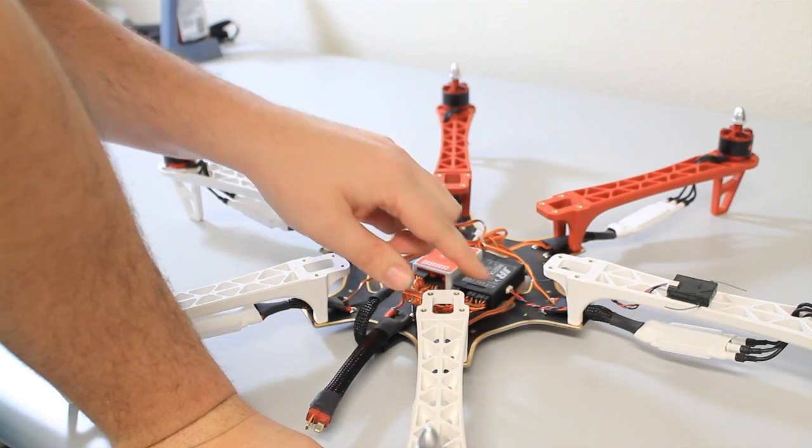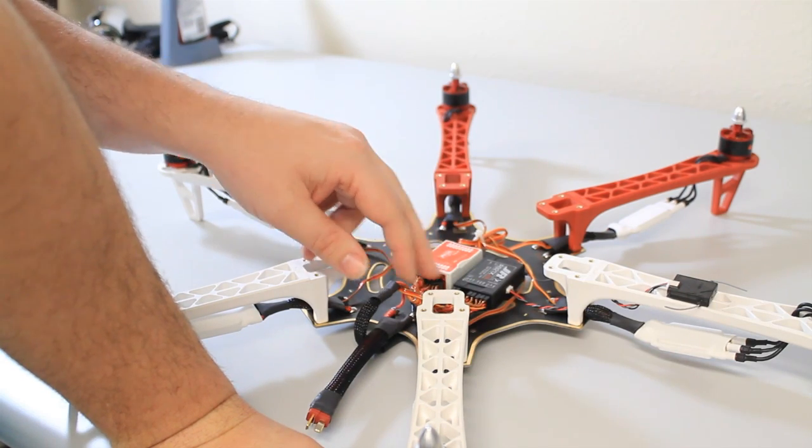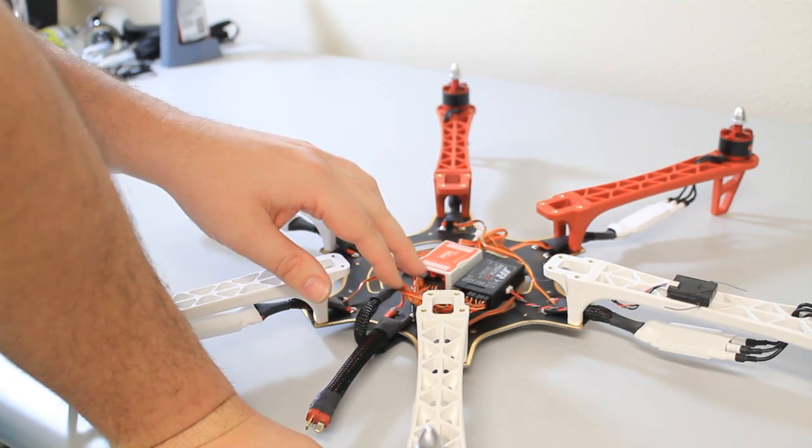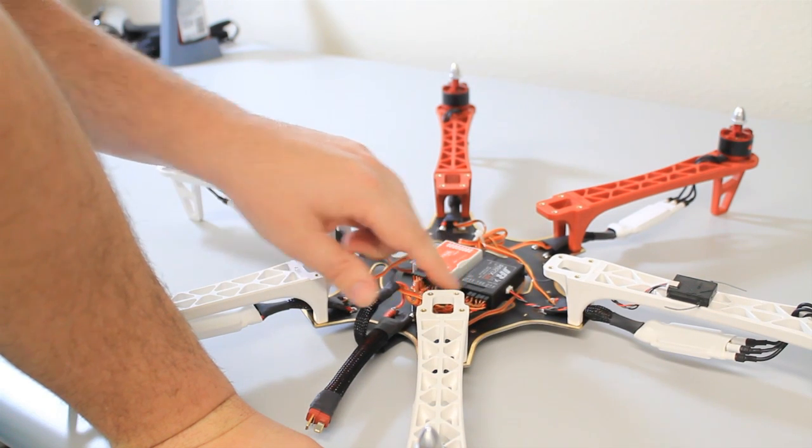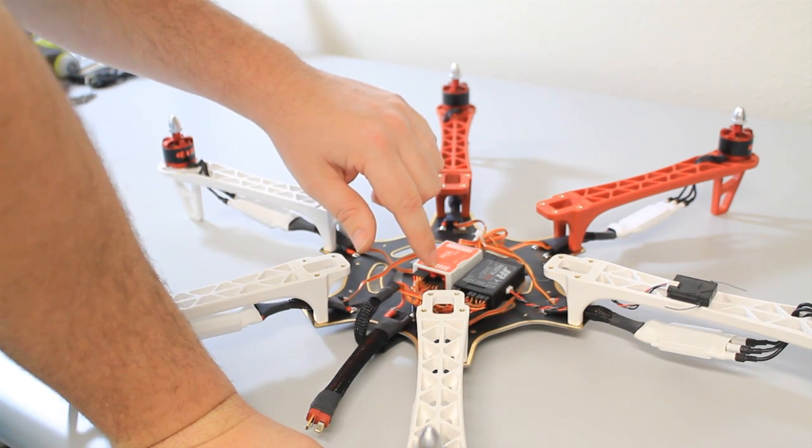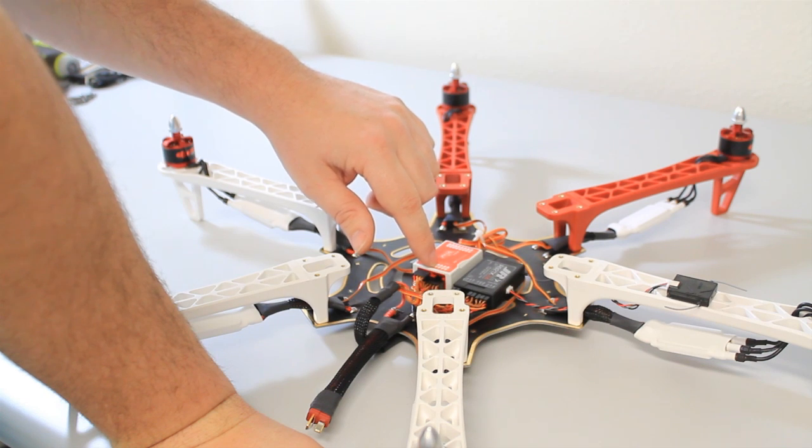And then you just do throttle to throttle, you know, elevator, elevator, rudder, rudder. Then what you want to do is on a two-position switch, usually your gear, you run that into your two-position switch right above the X1, the V.